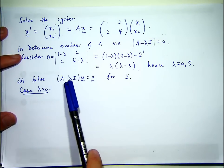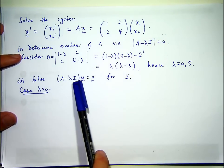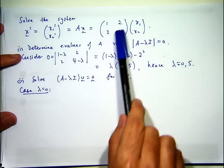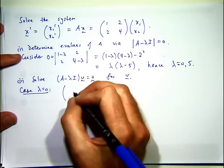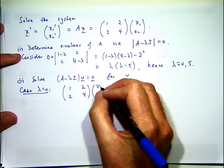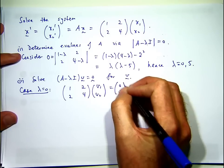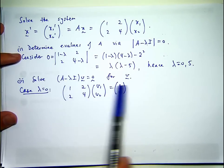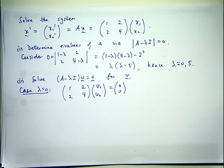For A minus lambda equals zero, it's just going to be basically the same matrix that we started with, just the matrix A. So what we want to do is come up with values for V1 and V2. The first line gives you V1 plus 2V2 equals zero. The second line gives you 2V1 plus 4V2 equals zero, so essentially they're the same equation.